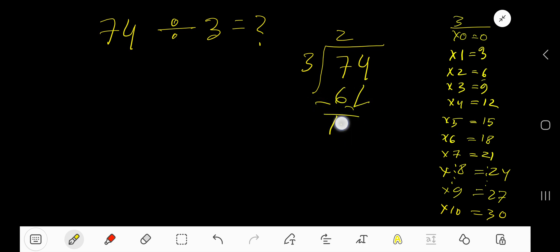Bring down the next digit. Now it's 14. 3 goes into 14 how many times? 5 times 15, which is greater, so 4 times. Write 4. 4 times 3...